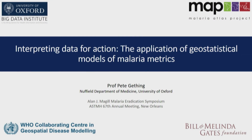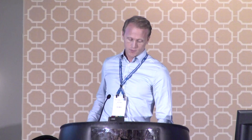I'm going to pick up on some of the themes that have been mentioned by most of the speakers already in this symposium. I'm going to talk about some of the work that we're doing at the Malaria Atlas Project back in Oxford — in particular, the development and application of a whole suite of different geospatial and geostatistical models, really to try and maximize the utility of information we can draw from what are often imperfect data arising from malaria surveillance in all of its different guises.